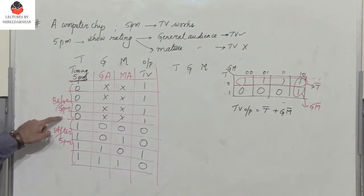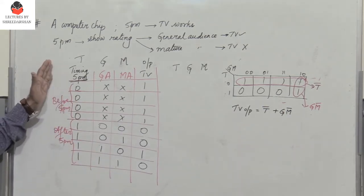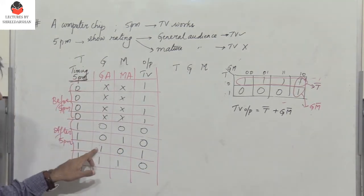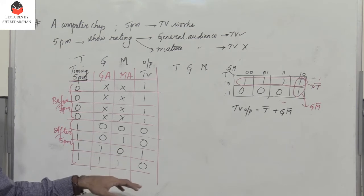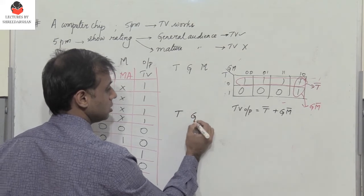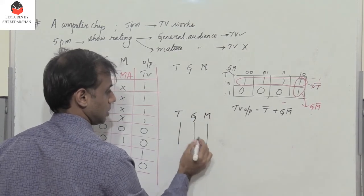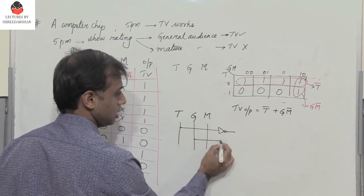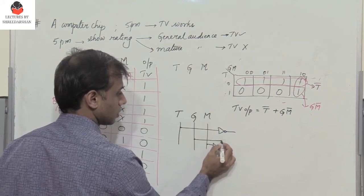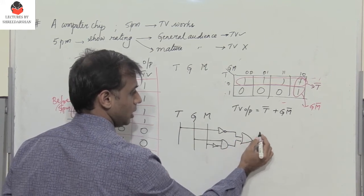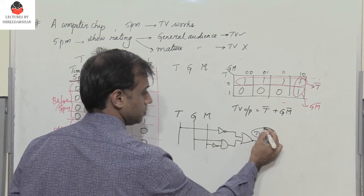T bar means when the input is zero - before 5 pm - the TV is on. Or when g is one, meaning you have a show for general audience and for mature audience it is zero, then the TV is on. A very simple circuit. We have three inputs t, g, and m. You pass t through an inverter and g and m through an inverter, pass it through an AND gate, and then you have an OR gate.